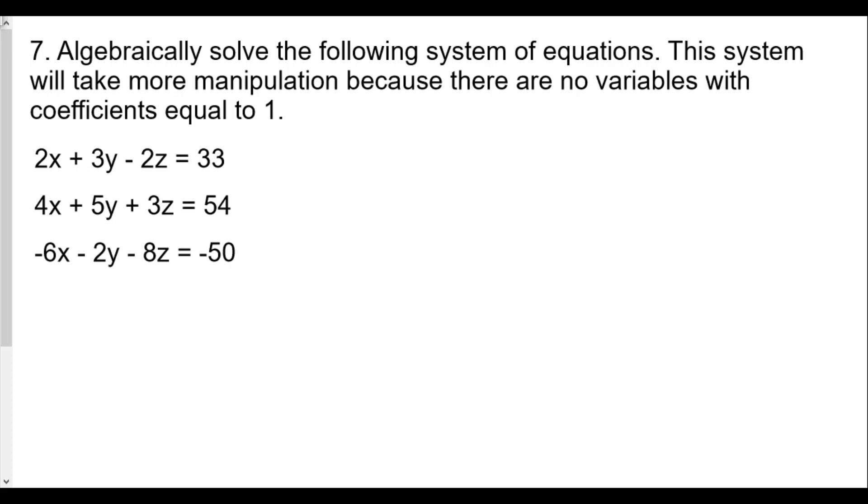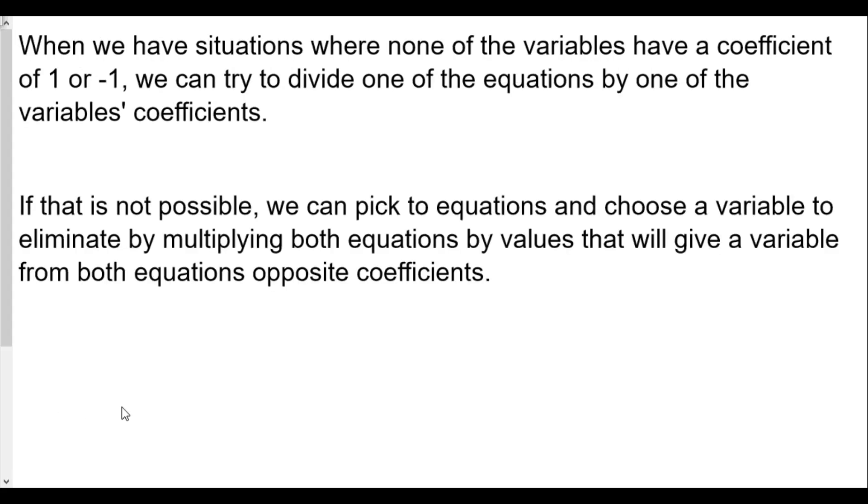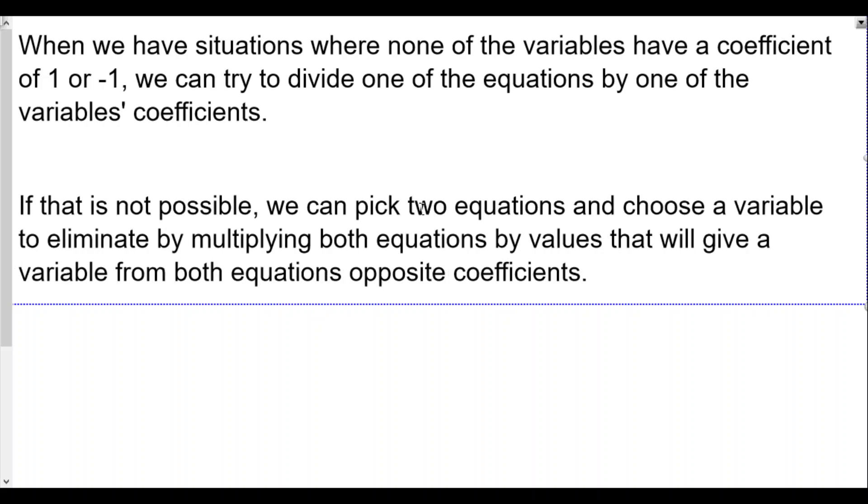We're going to try to figure out a plan. We have situations where none of the variables have a coefficient of 1 or negative 1. We can try to divide one of the equations by one of the variable's coefficients. The idea is that if we can get either a 1x or a 1y or 1z by dividing everything by the same value, then we can use that to help us solve like we did in the last problem.